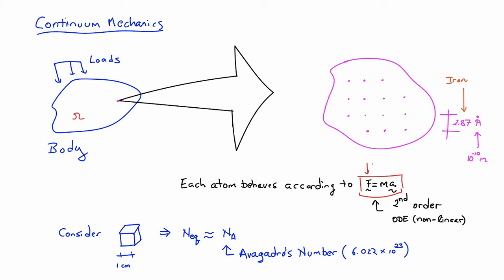And the other thing that you have to worry about here is that there are a lot of them. So if I consider, for instance, just a cubic centimeter of material of my iron, the number of equations that I would have to solve to figure out what the motion of the body is, if I apply some loads to it, is on the order of Avogadro's number. So Avogadro's number is 6.022 times 10 to the 23. So it's a very, very large number.